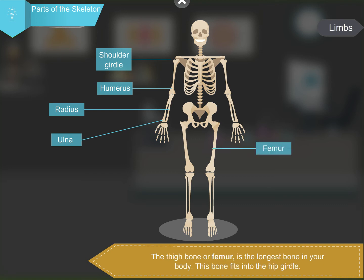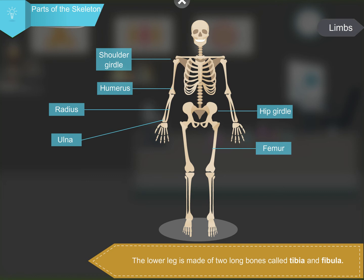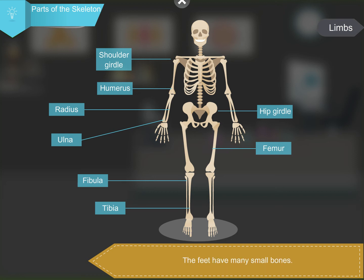The thigh bone or femur is the longest bone in your body. This bone fits into the hip girdle. The lower leg is made of two long bones called tibia and fibula. The feet have many small bones. The upper leg joins the lower leg at the knee.